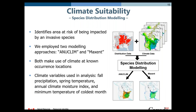I'd like to switch gears and talk about findings from our study, starting with the climate suitability aspect. We obtained up-to-date information on oak wilt distribution in the United States from the US Forest Service — a map showing counties where oak wilt has been identified. We also obtained distribution data for two of the main insect vectors. We then generated climate estimates at each occurrence location for four climate variables thought to be important for oak wilt survival and spread: fall precipitation, spring temperature, annual climate moisture index, and minimum temperature of the coldest month.